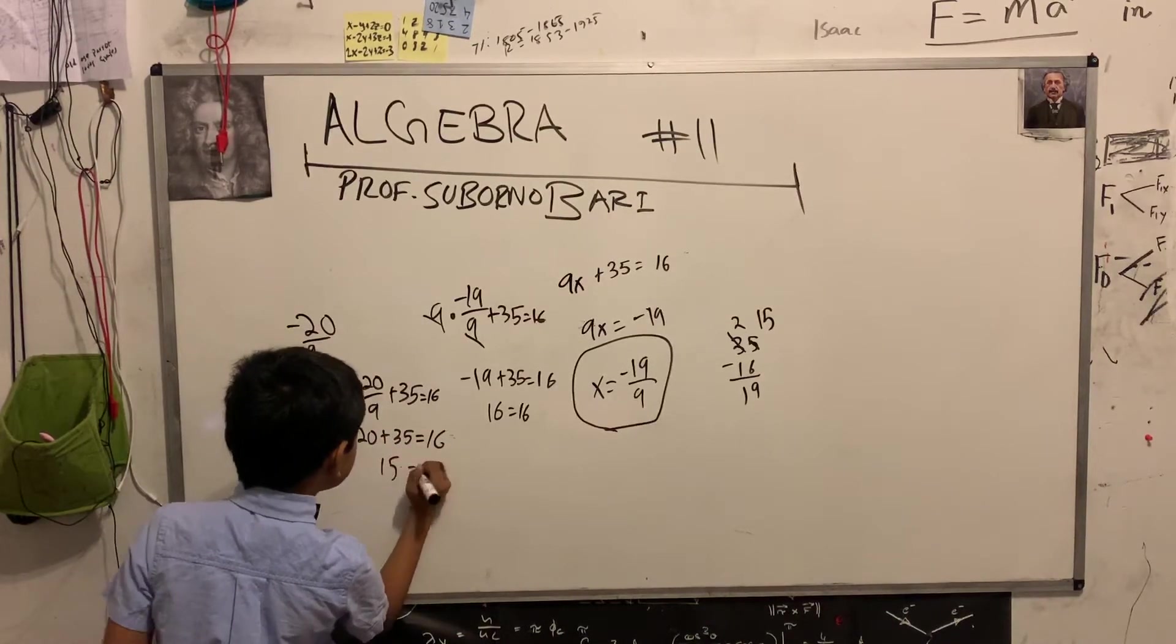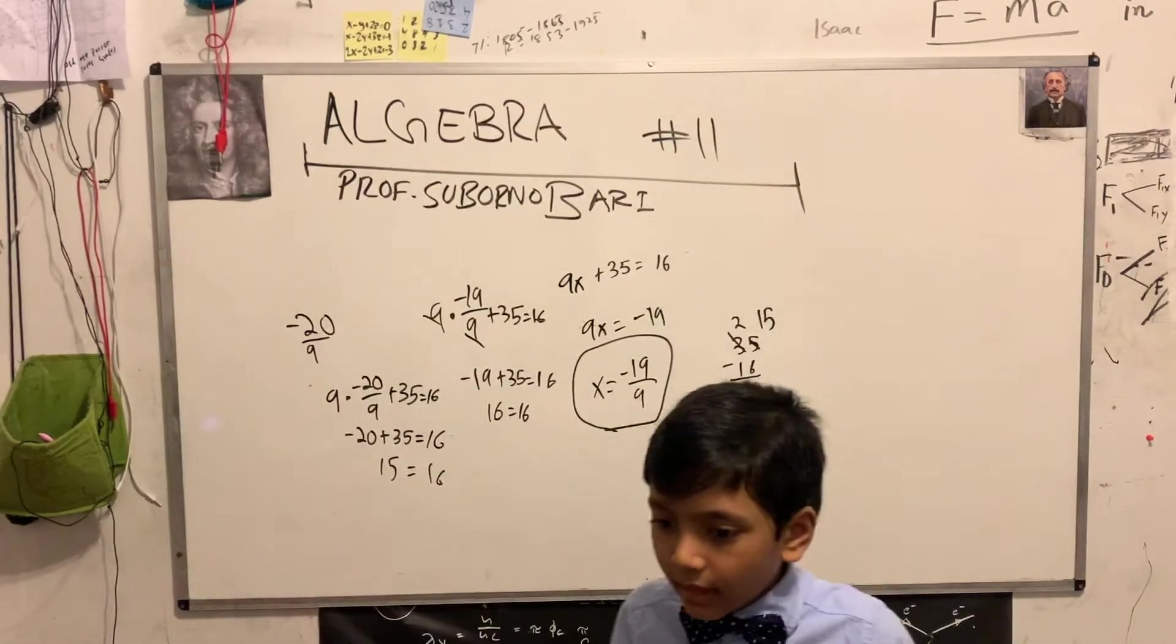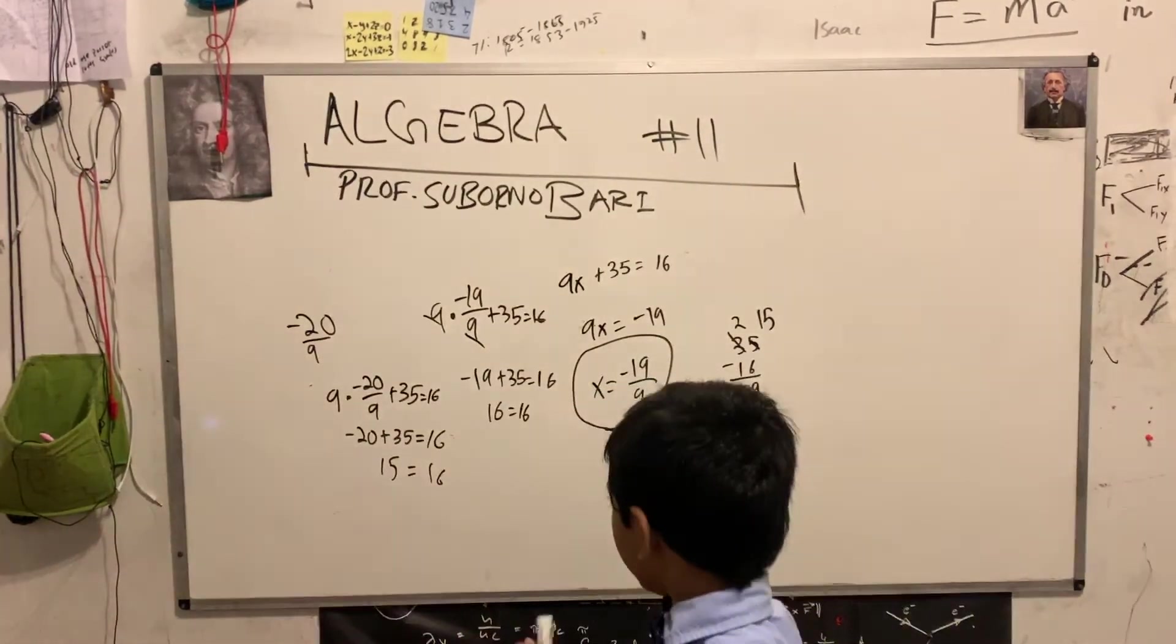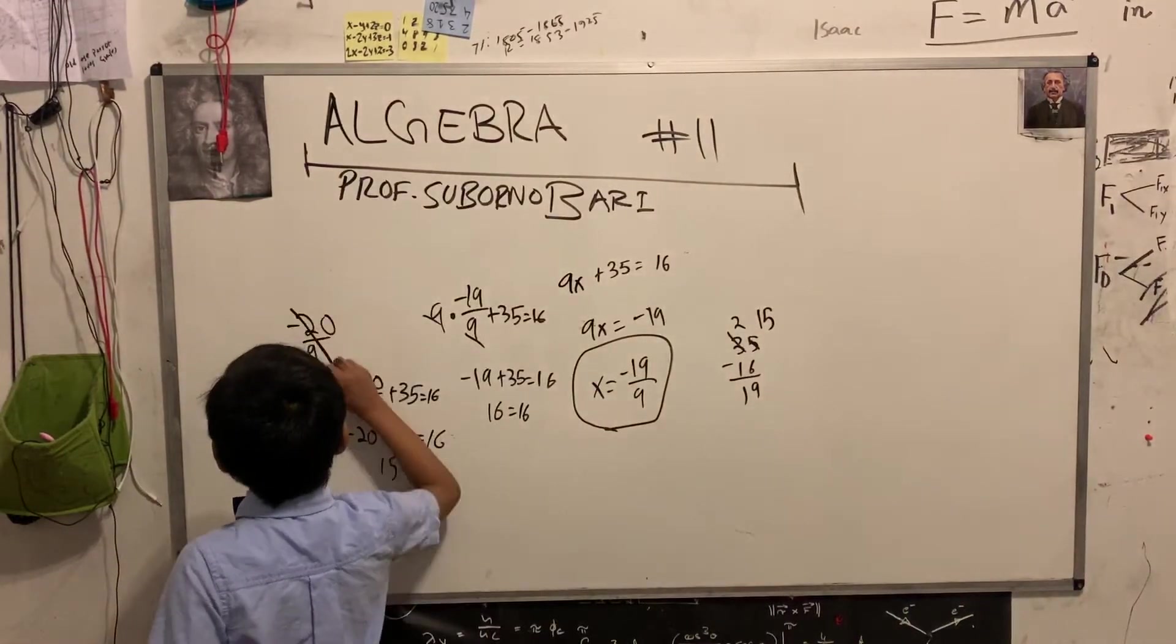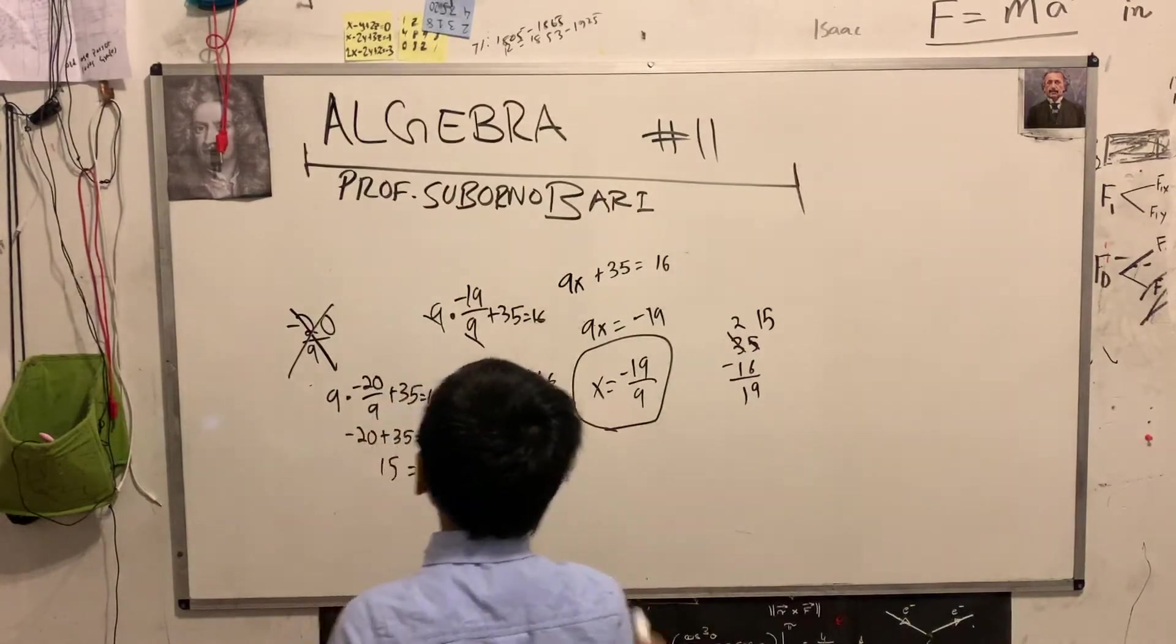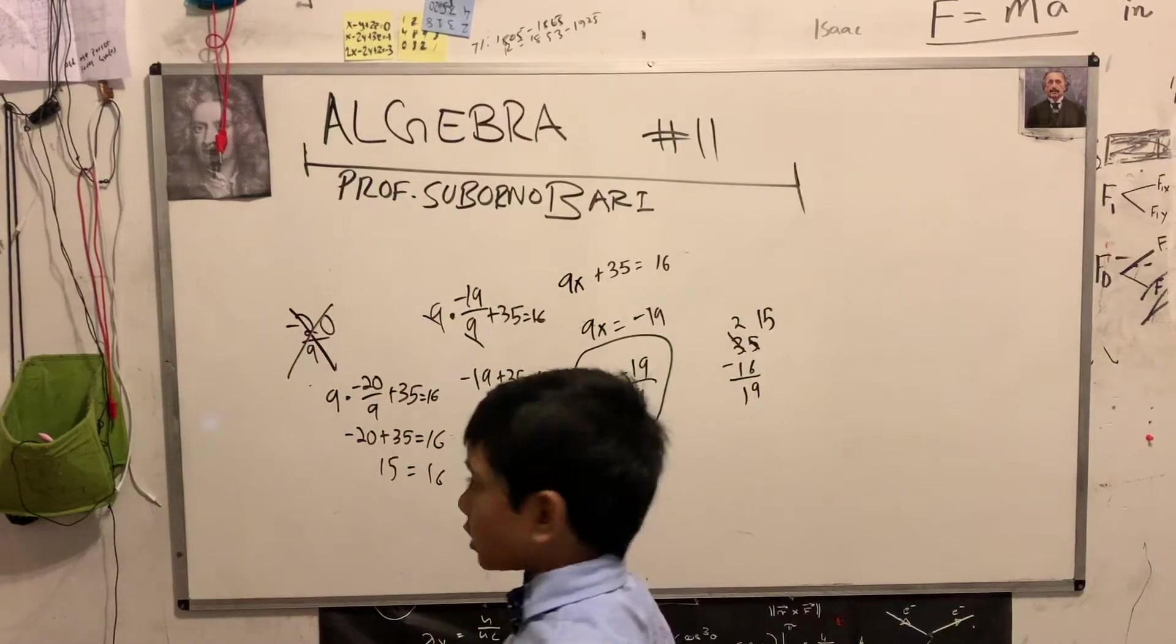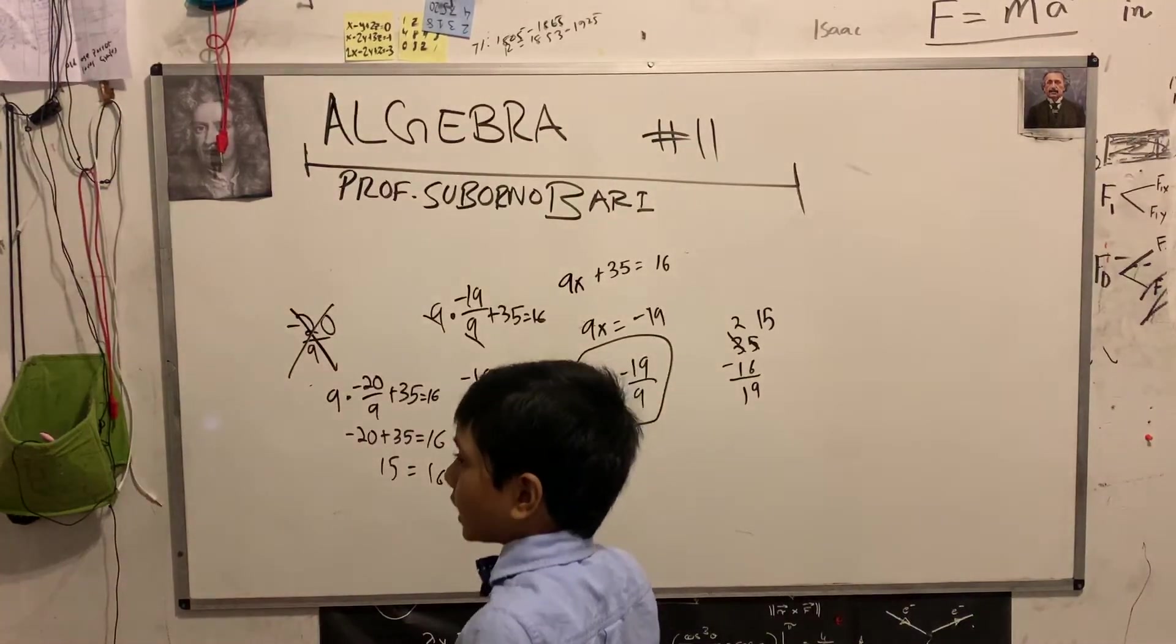Meaning 15 equals 16. Unless we drastically change the rules of math, then this thing wouldn't be true, meaning that minus 20 over 9 is not a solution. If anything other than minus 19 over 9 is just impossible to utilize. We can't use it.